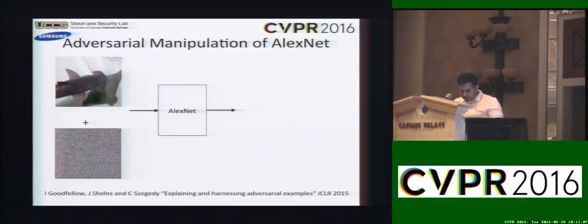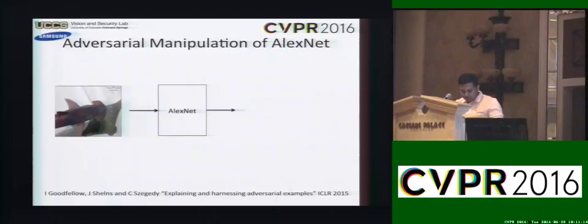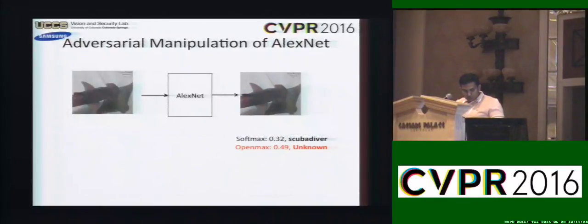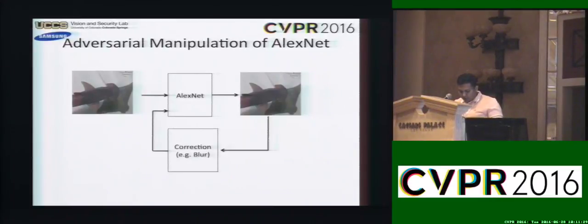More recently, Goodfellow et al. showed that intentional worst-case perturbations to input images resulted in CNNs outputting incorrect answers with high confidence. In some cases, OpenMAX was able to identify such inputs and mark them as images belonging to an unknown category. OpenMAX rejects such adversarial images as outliers from the scuba diver class in this case.